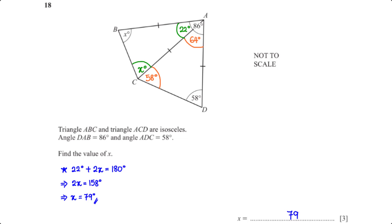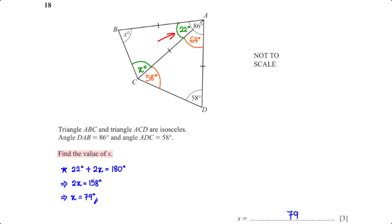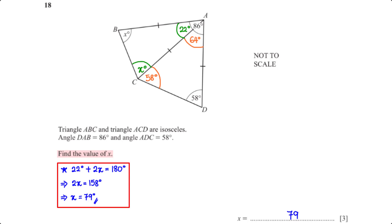Triangle ABC and triangle ACD are isosceles. Angle DAB is 86 degrees and angle ADC is 58 degrees. Find the value of x. Base angles in an isosceles triangle are equal. Subtracting 2 times 58 degrees from 180 degrees gives 64 degrees. Subtracting 64 degrees from 86 degrees gives 22 degrees. For triangle ABC, 22 degrees plus 2x equals 180 degrees. Solving this equation gives x equals 79 degrees.